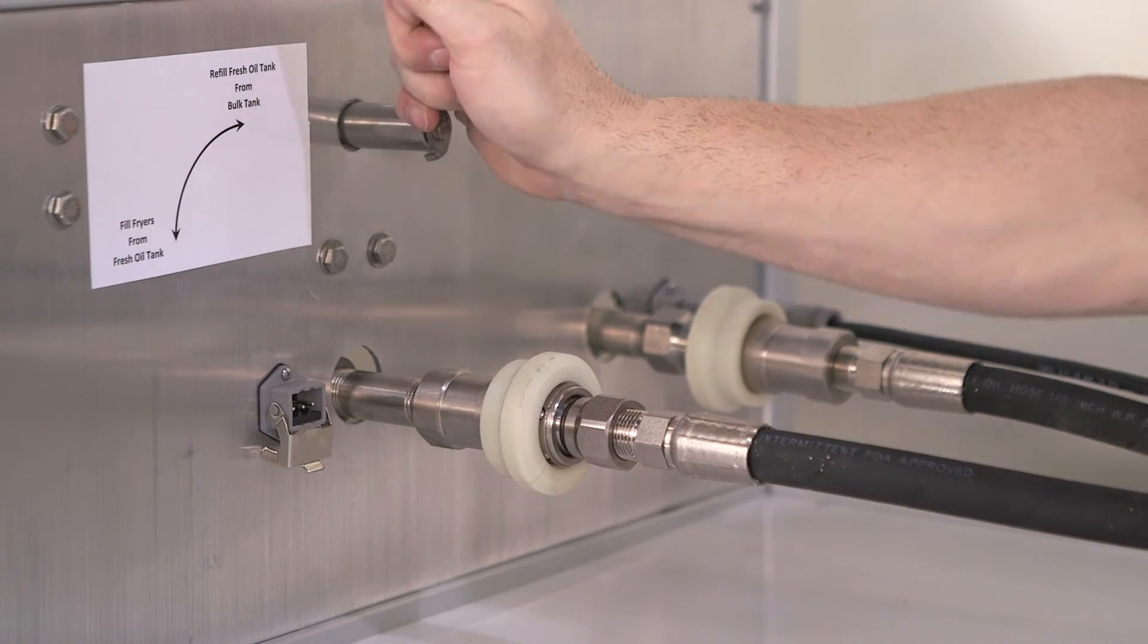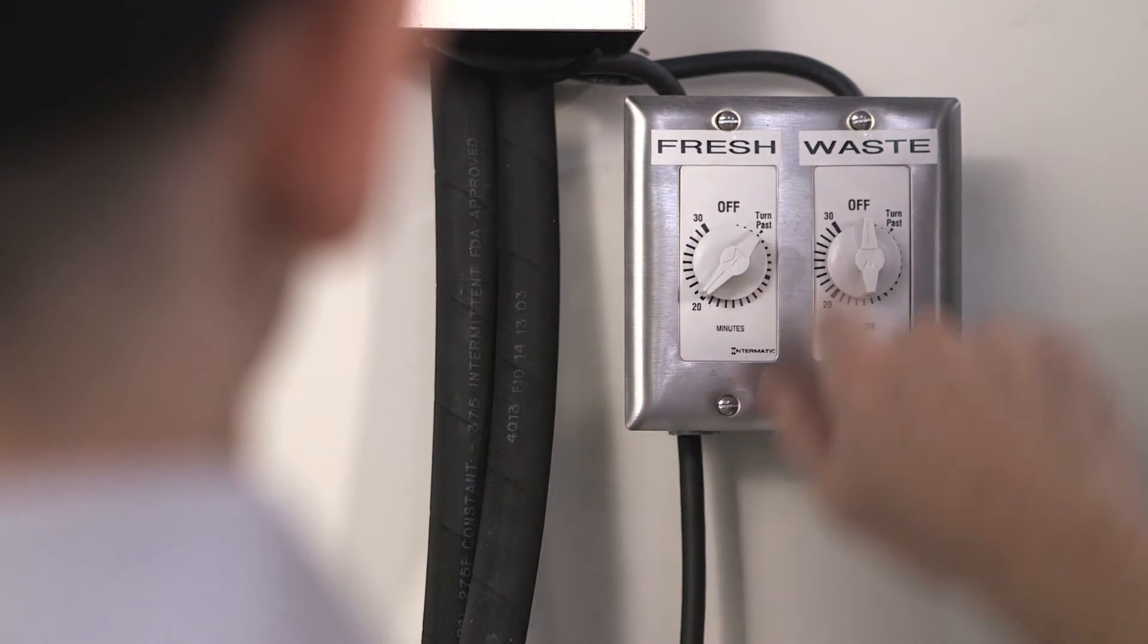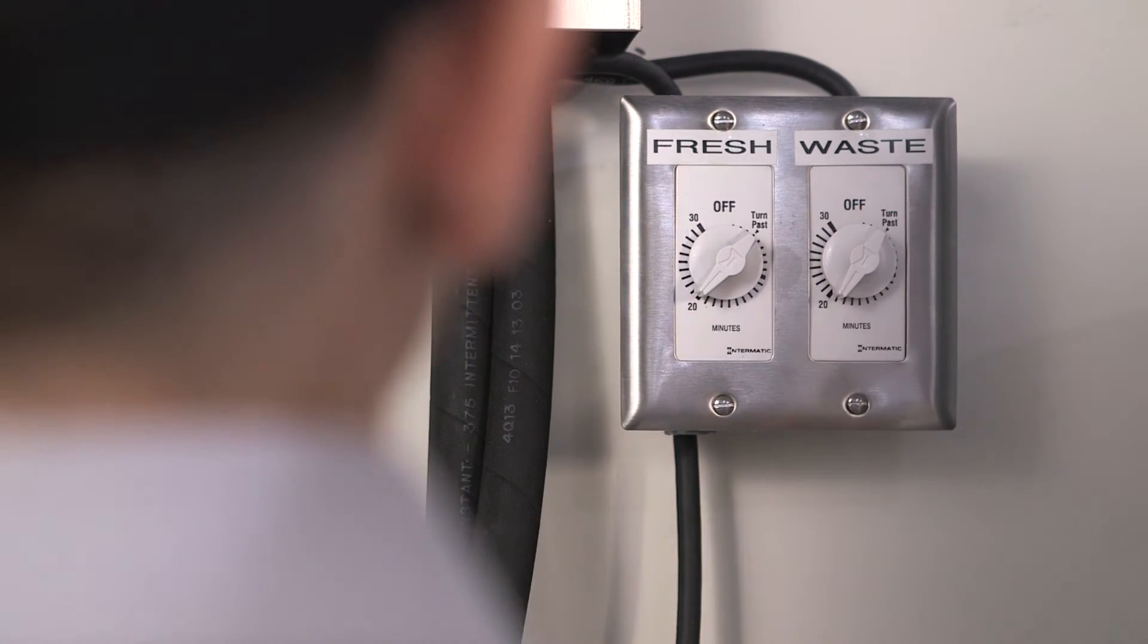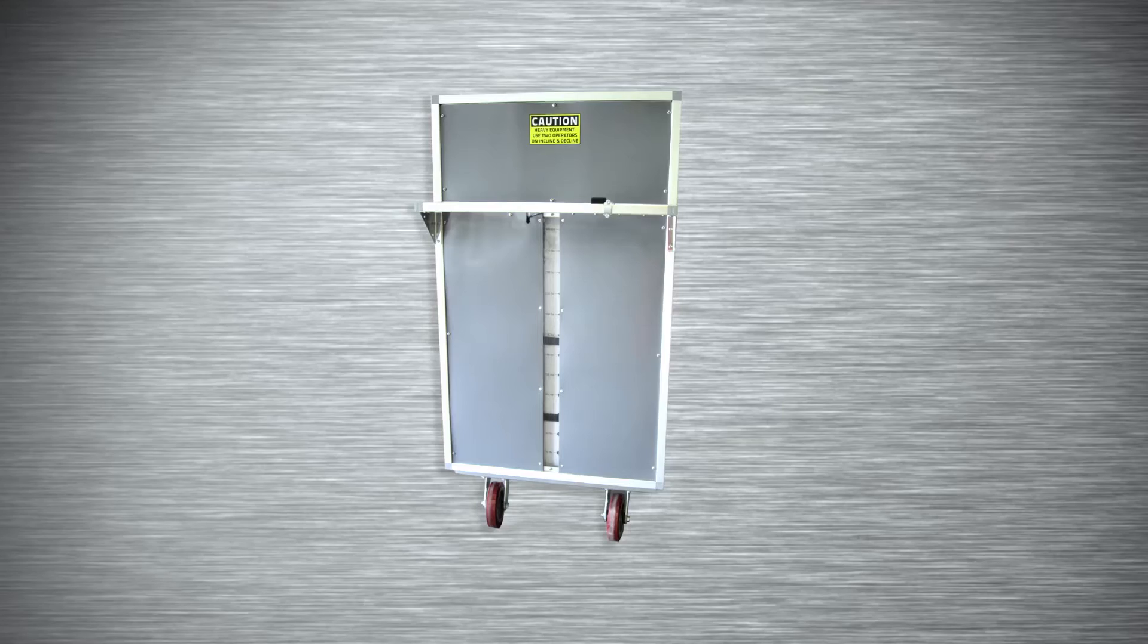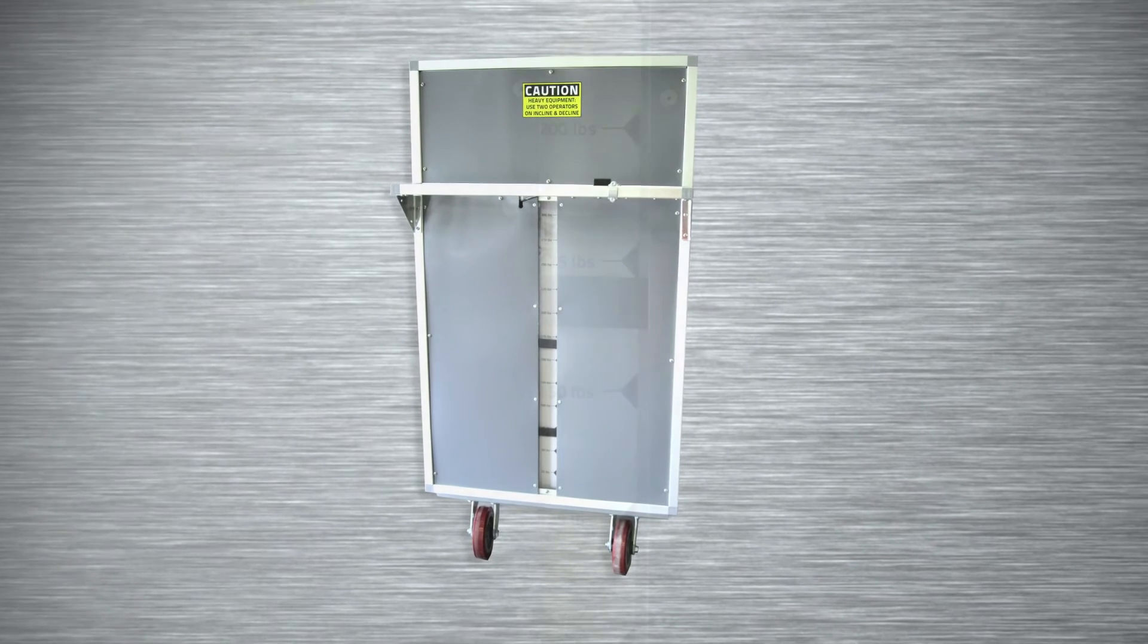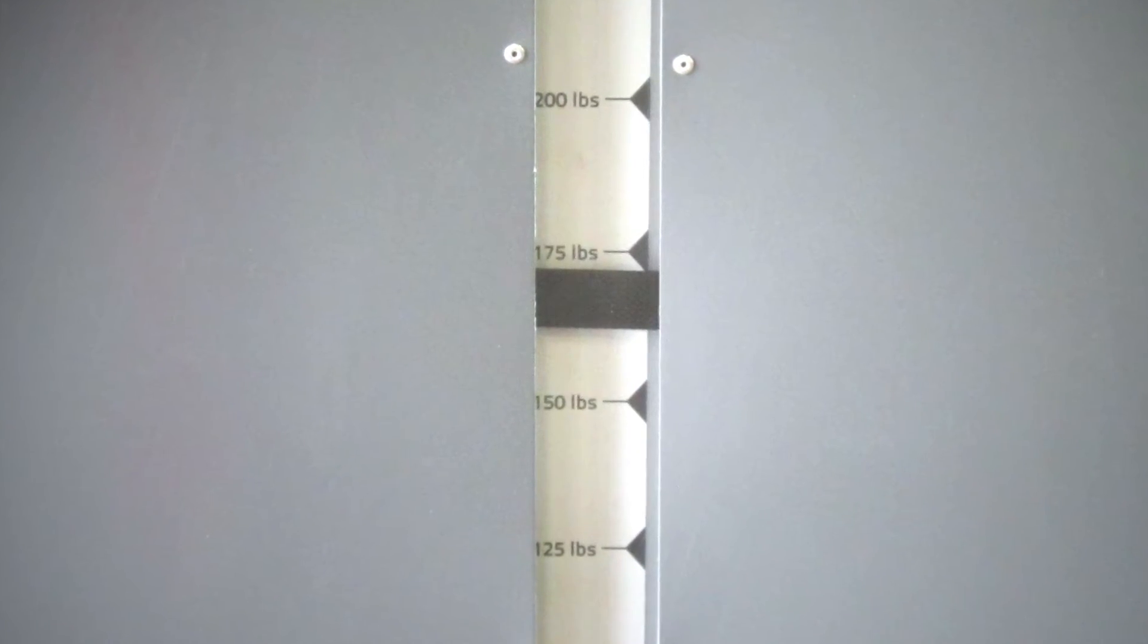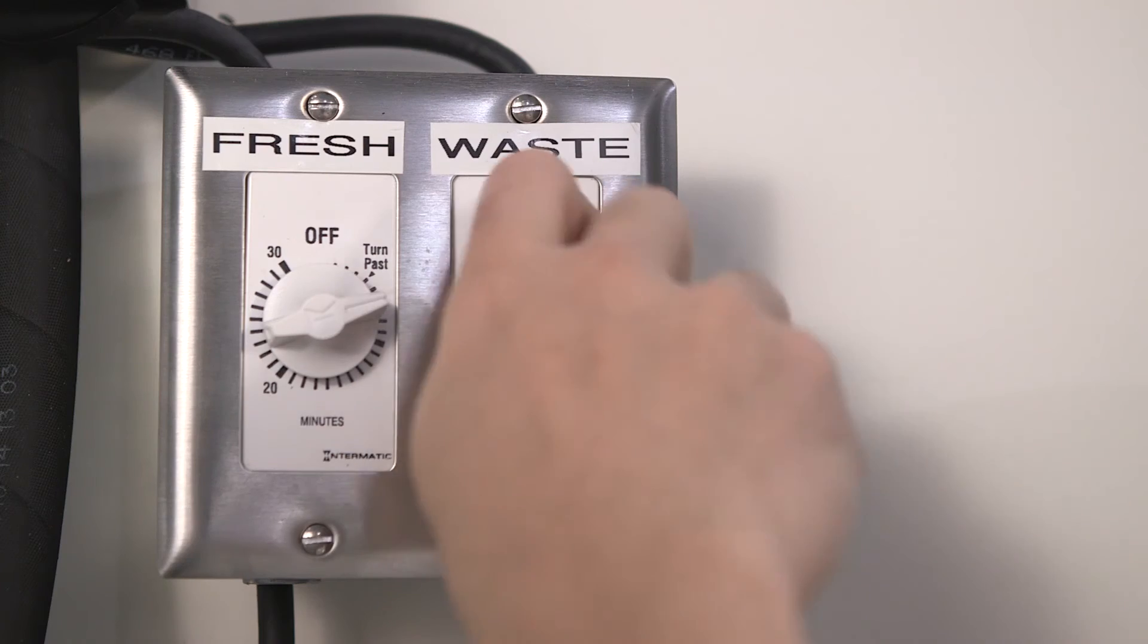Then, set the unit's handle to refill fresh oil tank and turn the fill station's timer switches to start the fresh and waste tank pumps. Each portable unit has a see-through window with a label gauge to show oil levels. When the portable unit is full of fresh oil and the used cooking oil tank is empty, turn off the pumps by turning the switches to the off position.